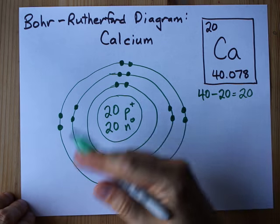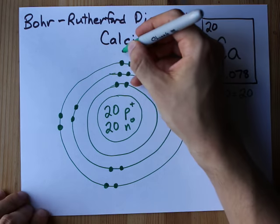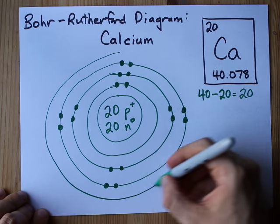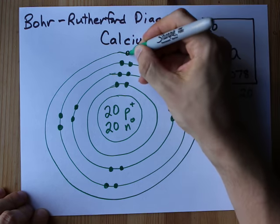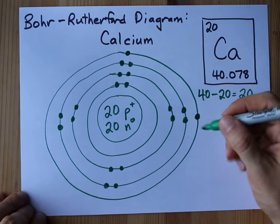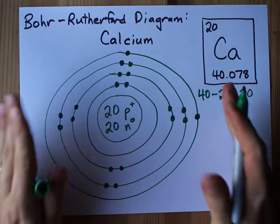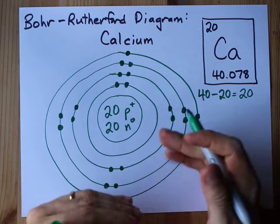We need 2 more, we have to put those into the fourth shell. Draw a fourth circle around, and you're allowed to put 2 electrons here. I like putting them 1, 2, spread them out before you double them up, but we're stopping here because we're only allowed to have 20 electrons,